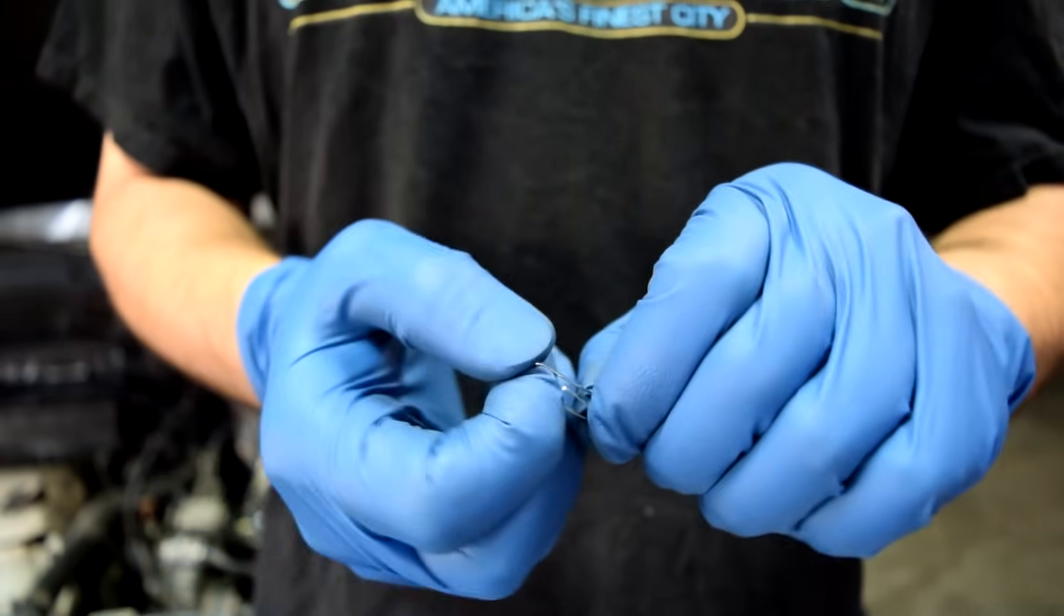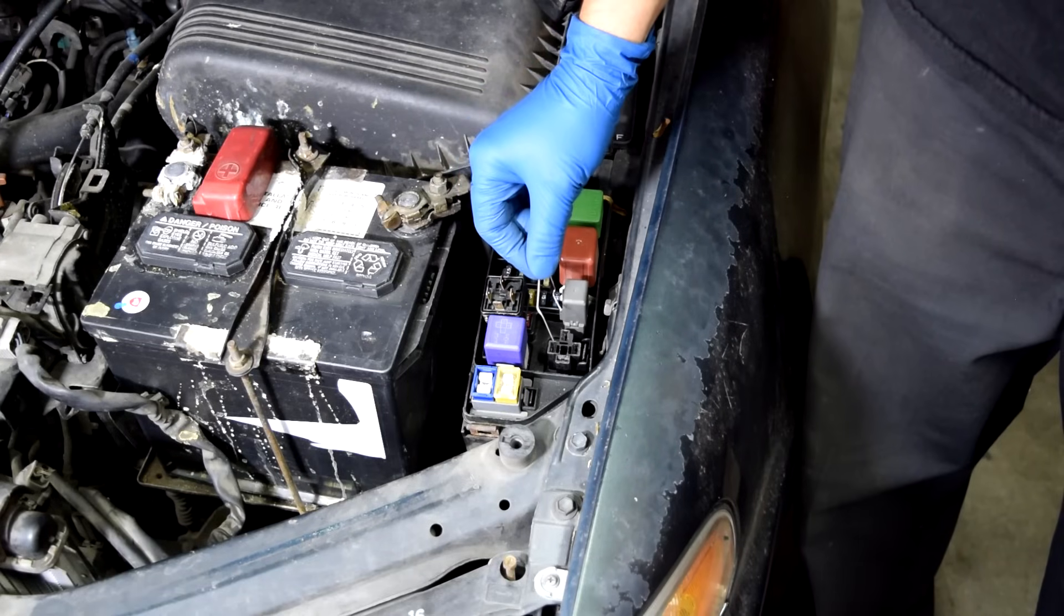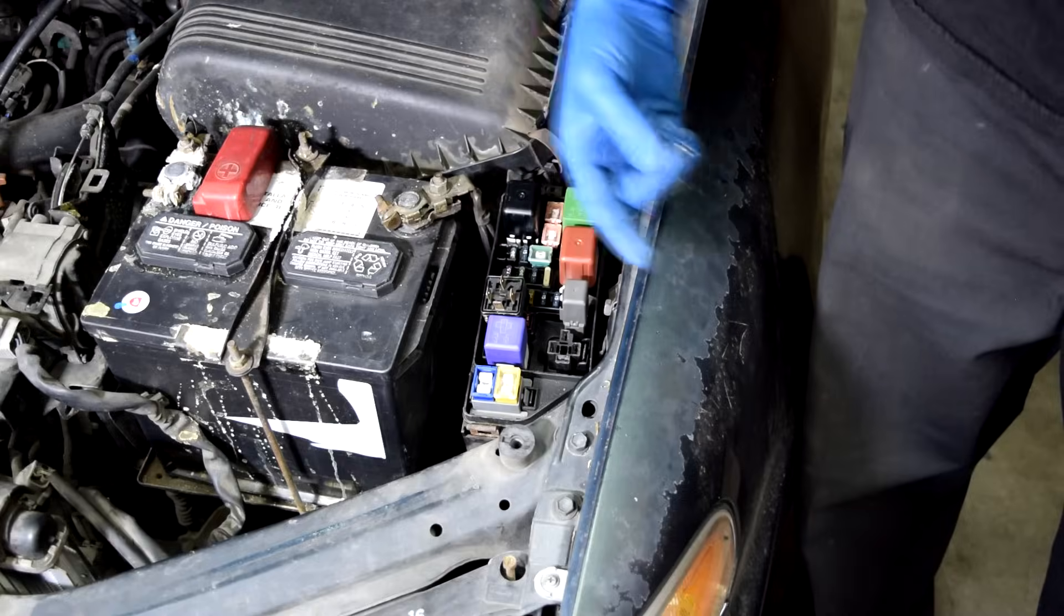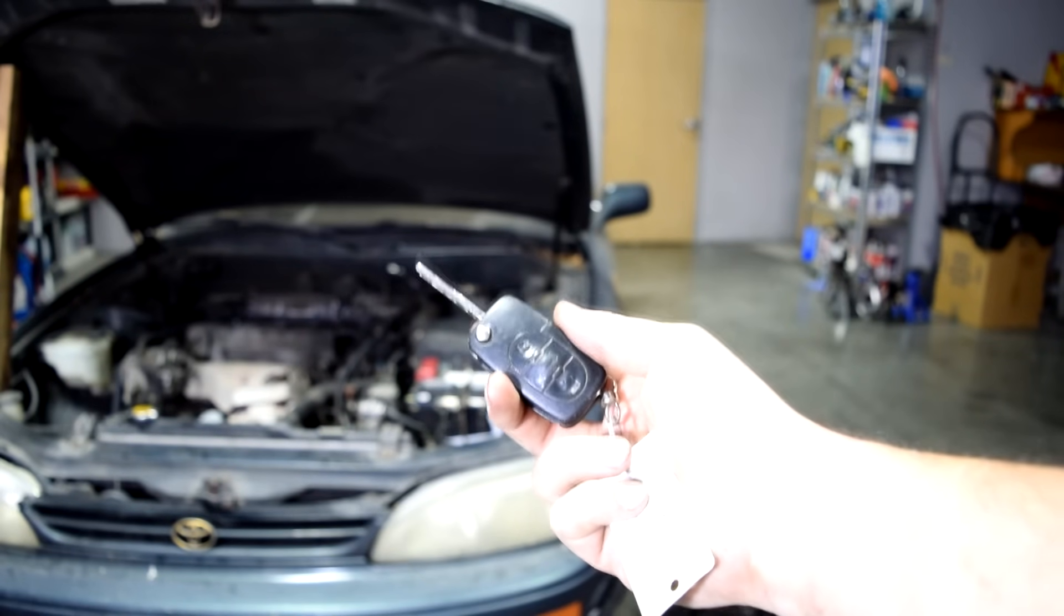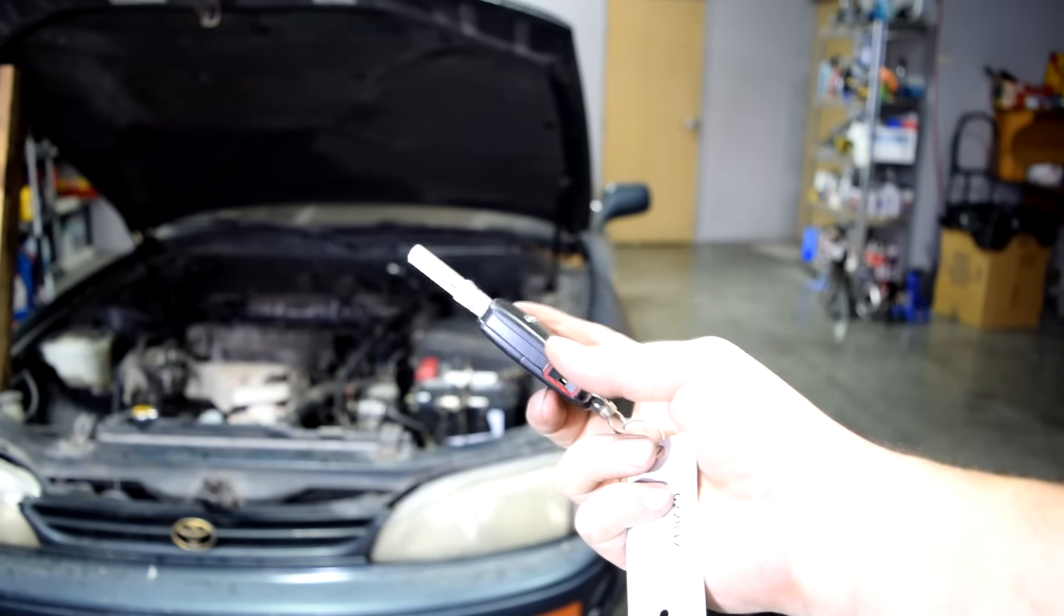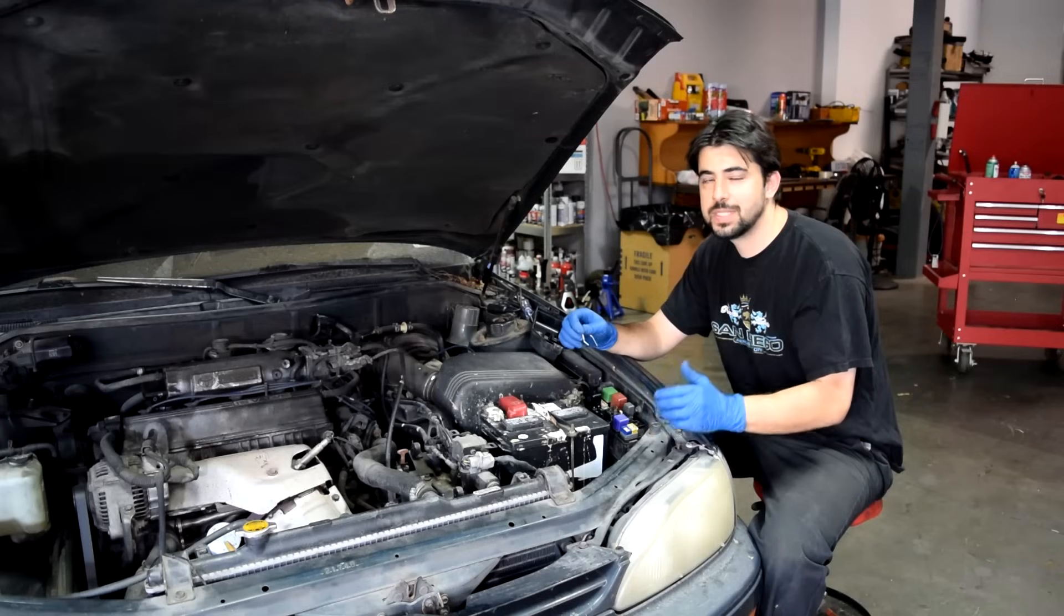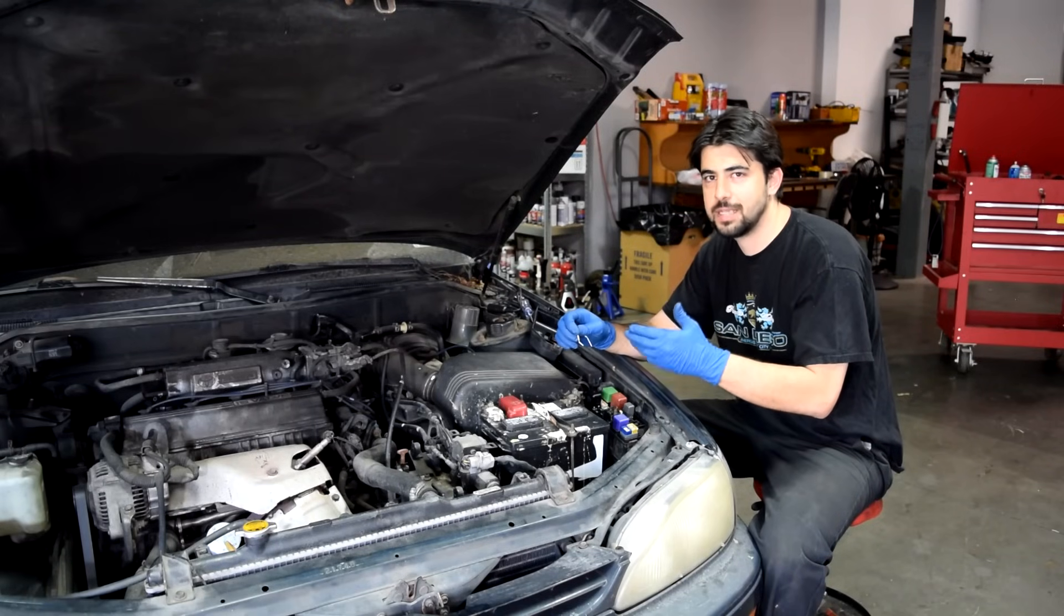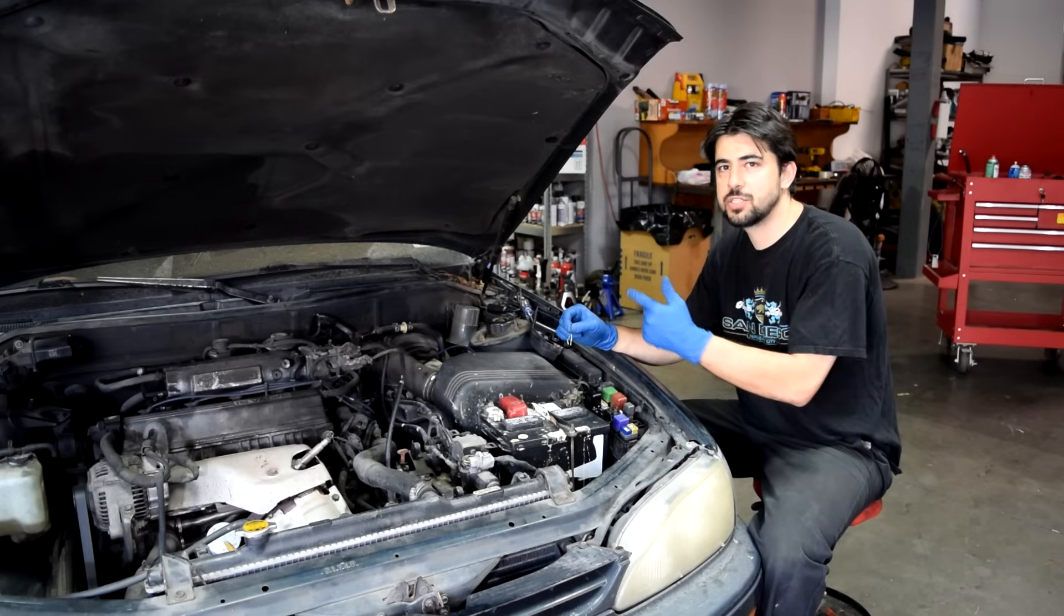Next you grab your paper clip, open it up like this. Next all we have to do is to jump terminal 30 to 87, that should engage our starter, turn our engine and start our engine as well. Now I have to mention that this is not going to work on cars that have a chip or a safe passcode stored in the key, but it should work on any car with this older style starting system. Once again just make sure it is terminals 30 and 87 on your car, it's not always the same for each car, and then you remove this after your engine starts.